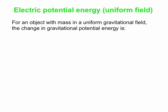Let's start with what happens in a uniform field. We'll go back to the gravitational situation because we're very familiar with that. We have an object with mass in a uniform gravitational field — for example, a baseball you hold in your hand. If you move it around, it experiences a change in gravitational potential energy, and that change is given by Mgh.